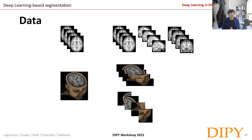So what we can do is first just use 2D slices; however, that would cause a loss of information on a certain axis. What else we can do is use all the planes, all the 3D planes, and integrate their information together. This would reduce the loss of information; however, it could increase training time.